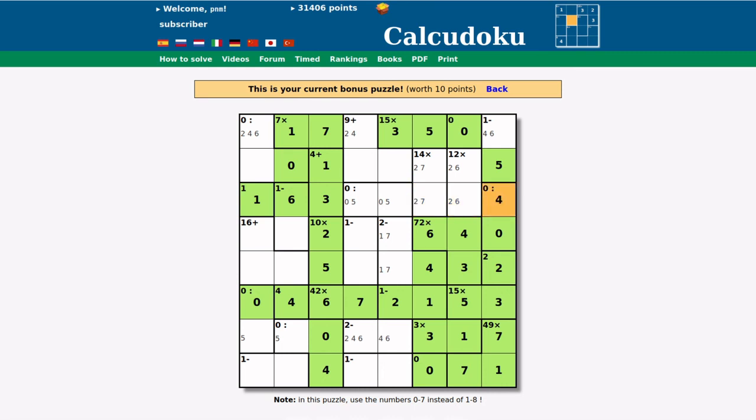Therefore, this must be a 4. 2, 6 here. 7, 2 here. This must be a 6. Now we're going rather well.